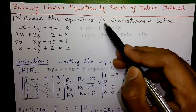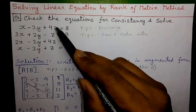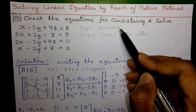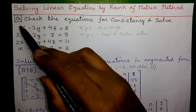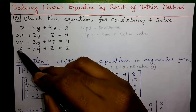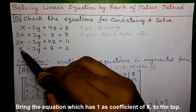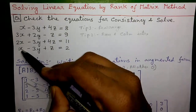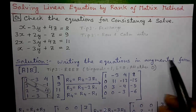Our question is: check the equations for consistency and solve. Here we have four equations — we have to check them for consistency and solve them. First tip: rearrange the equations. Rearrange means bring the equation which has only one X term, or a single X term, to the top. That will make your calculation a lot easier.